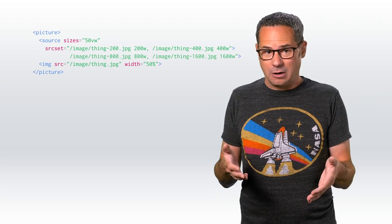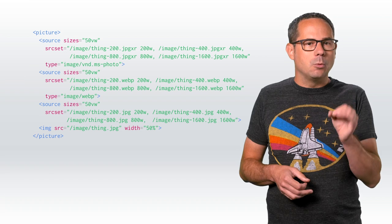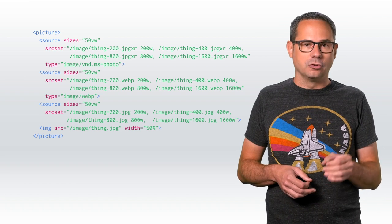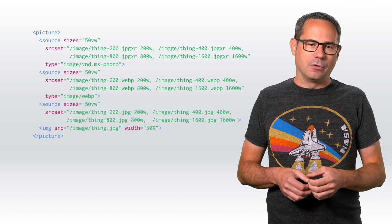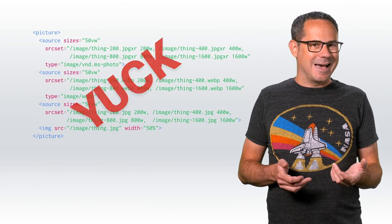I've long been a fan of Source Set and the picture element to serve the right image to the right device, but it can be a little hard. For example, say I wanted to display an image at 50% of the user's viewport and send the right image to each device. My phone has a very different viewport than my laptop, so I need to take that into account. I also need to consider screen resolution — my laptop has a 2x screen versus my desktop monitor, which is only 1x. And finally, it would be nice to send a JPEG XR to Edge browsers, WebP to Chrome, and JPEG to everything else. But that's just too hard.